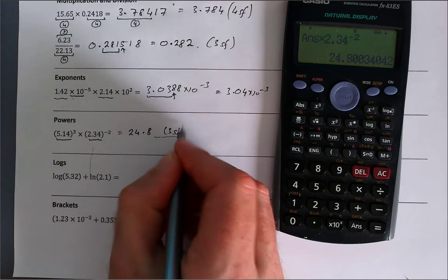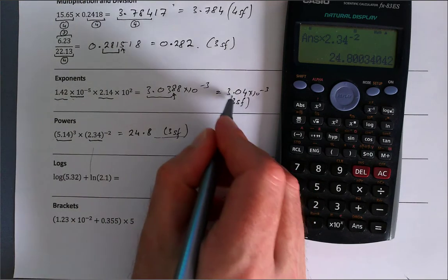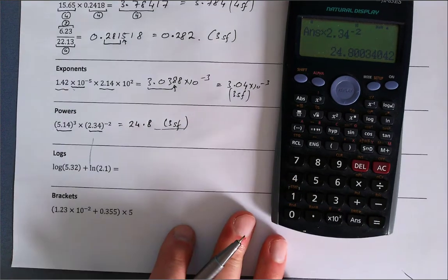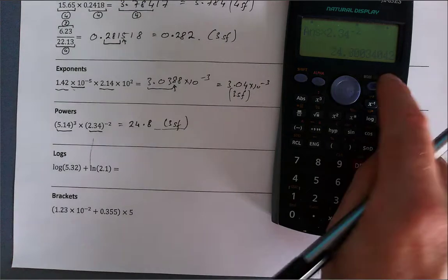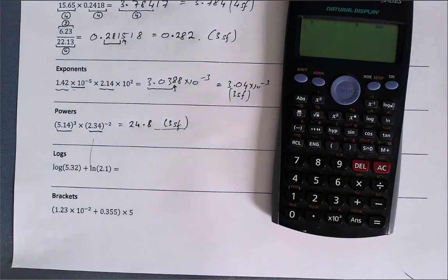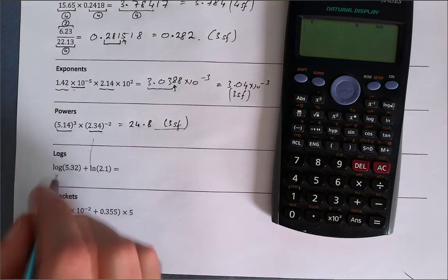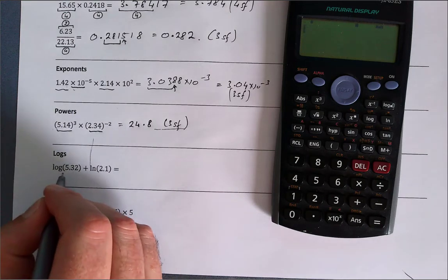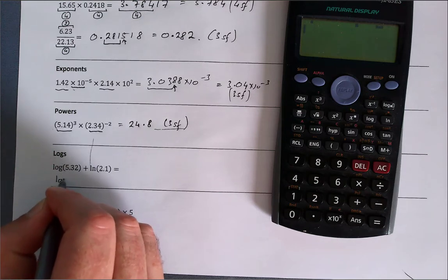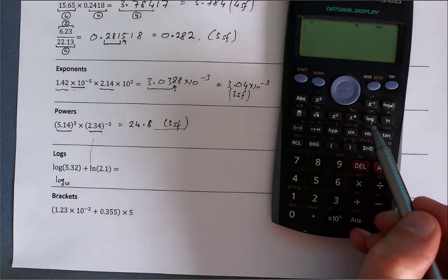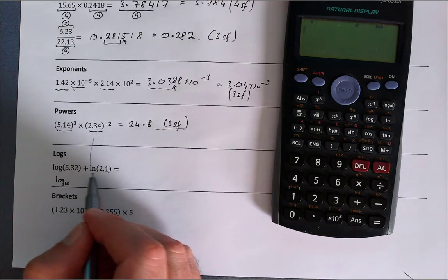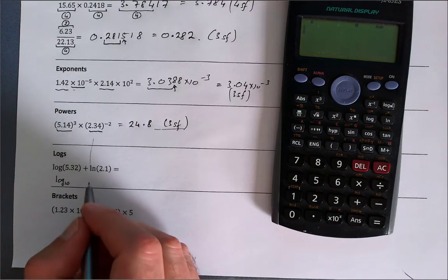So I'll write my answer to three significant figures. Logs. Logs are commonly used in science. They're a way of expressing very large or very small numbers easily. Here we have two different types of logs. Where it's just log, normally this is assumed to mean log to the base 10—this button here in the calculator. Where it's ln, this is a special type of log, this is called log to the base e. It's the opposite of the e to the power of x.